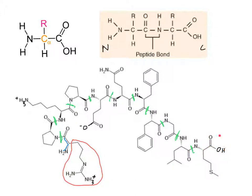This final amine, alpha carbon, and carbonyl is our C-terminus, because this is the last amino acid and we have the carboxyl end. This would be the side chain of this last amino acid. At this point we have identified all the individual amino acid residues, the N-terminus, and the C-terminus of the protein.